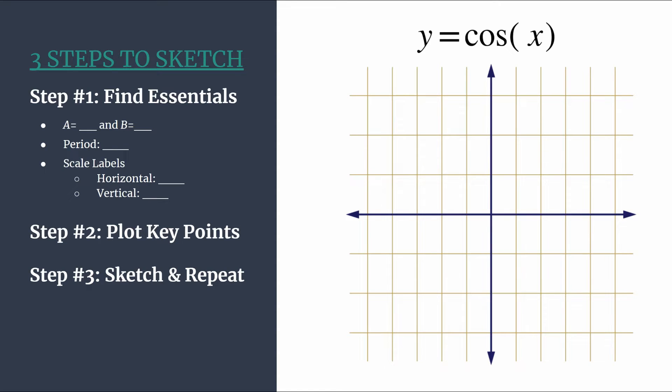So a, in the case of this cosine graph, is an understood one out front. It's always the coefficient in front of your cosine function. So a is one and b is your coefficient in front of x. And so in this case, it's also an understood one.